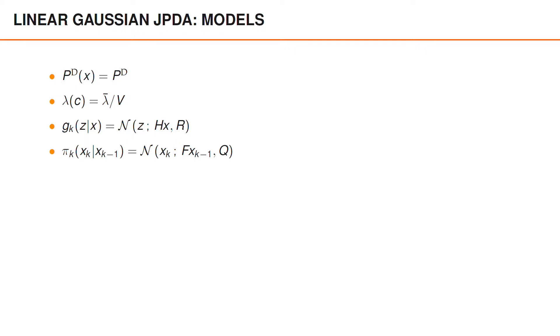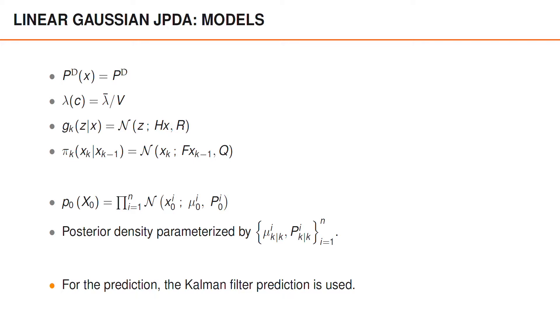We can show what the predicted and updated merged Gaussian parameters are for linear Gaussian models. So we let PD be constant, the clutter intensity is uniform, and the measurement likelihood and transition density are linear and Gaussian. If the initial prior is Gaussian, then the posterior density will be parametrized by the mean and the covariance for each object. For the prediction, the Kalman prediction is used. Because we have seen this many times already, we will not show it again.